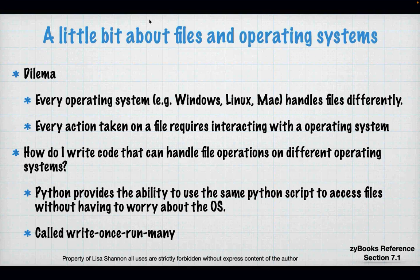Let's talk a little bit about files and operating systems. There are multiple operating systems out there — the big ones are Windows, Linux, and Mac OS, which is a lot like Linux. And then you have mobile operating systems: iOS and Android. Every operating system handles files differently. If you're talking about laptops or desktops, you're talking about Windows, Linux, and Mac. If you're talking about phones, you're talking about iOS or Android. And they all handle it differently. iOS does not handle files the same way the Mac operating system does.